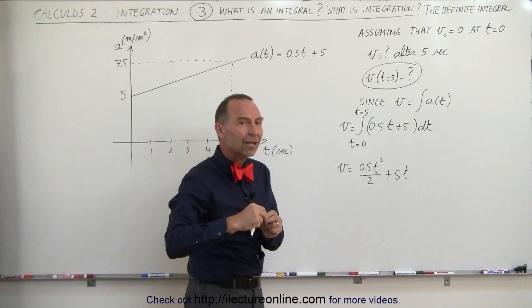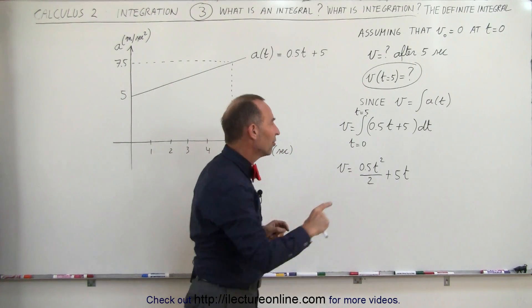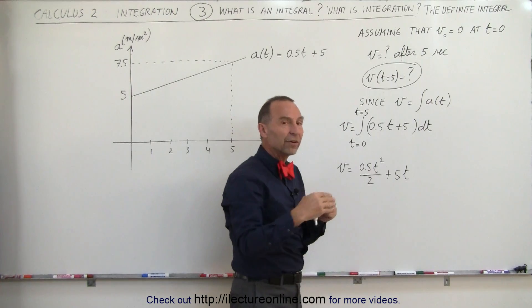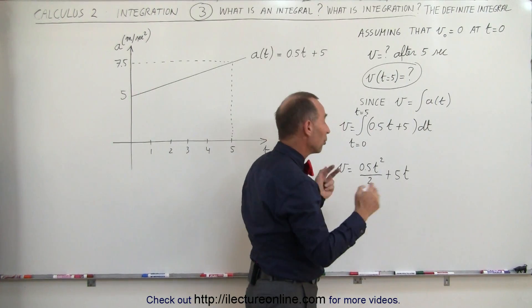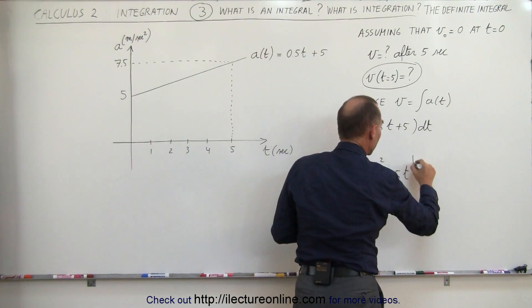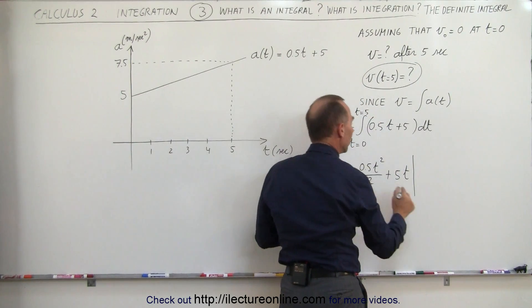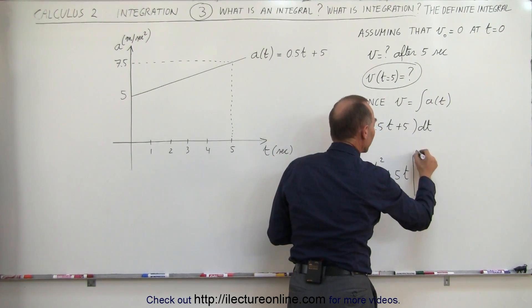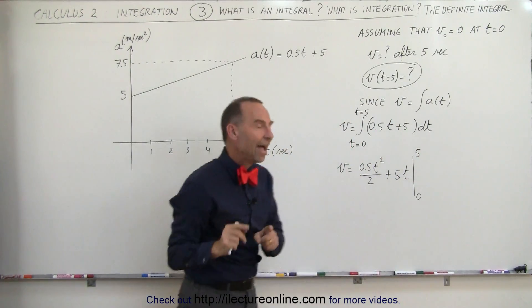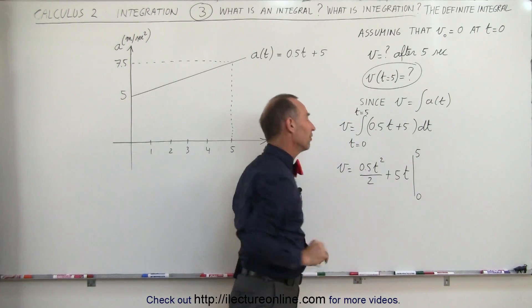And normally, we would add a constant of integration. But since we have limits there, the constant of integration will disappear by itself. We'll show you later how to do that. But here we can simply say, when we have a definite integral with limits on the integral, we can just put the numbers there, and we do not have to put in a constant of integration.